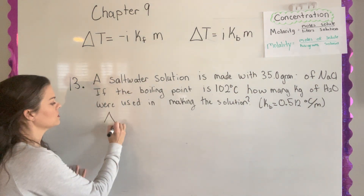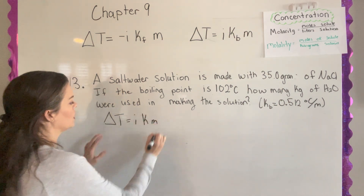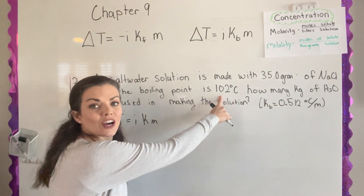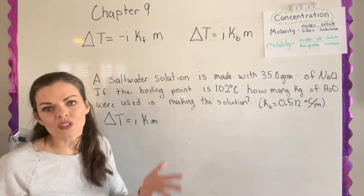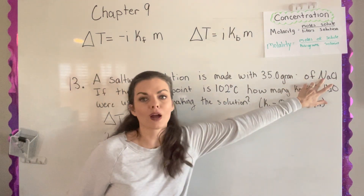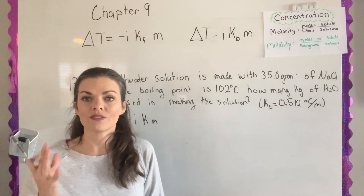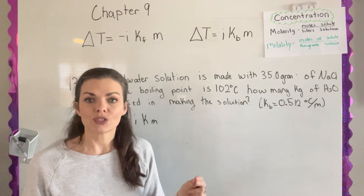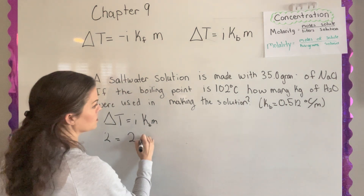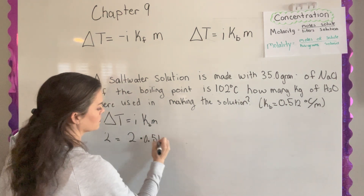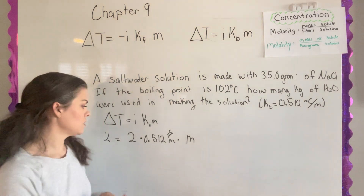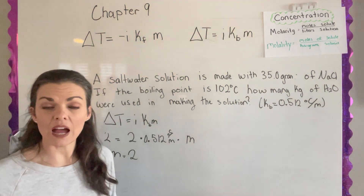We're using the boiling point equation, and remember for boiling point, i is positive. Delta T: water boils at 100 degrees Celsius and they give 102, so the difference is 2. For i, sodium chloride is an ionic bond of sodium and chlorine — it splits into those two ions, so i equals two. They give me Kb. Solving for molality, I get molality equals two.